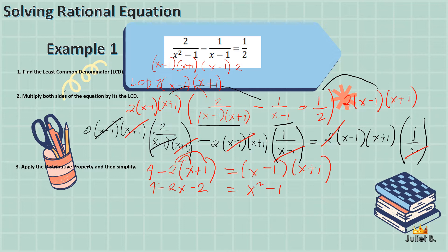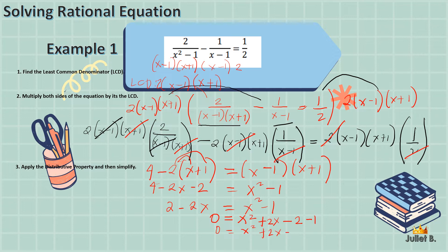We have 4 minus 2 is 2, minus 2x equals x squared minus 1. Putting all terms on one side: x squared plus 2x minus 2 minus 1 equals 0, giving us x squared plus 2x minus 3 equals 0. This is a quadratic equation. Factoring: we need factors of negative 3 that give positive 2, which are negative 1 and positive 3. So: 3 times negative 1 is negative 3, and 3x plus negative x is positive 2x.